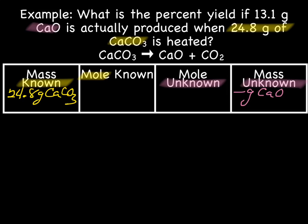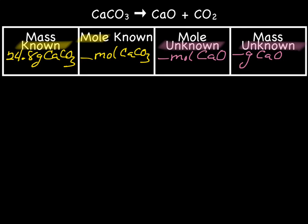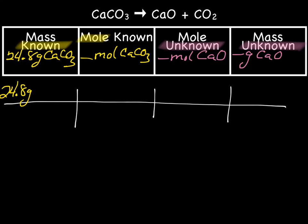And our unknown is blank grams of CaO. So we're going to need to drive through mole known town, and mole unknown town. And from here, we just do the calculations we've been doing. So we're going to have a four-column grid for this problem. And we'll start by putting the known in. So we have 24.8 grams CaCO3 over 1.